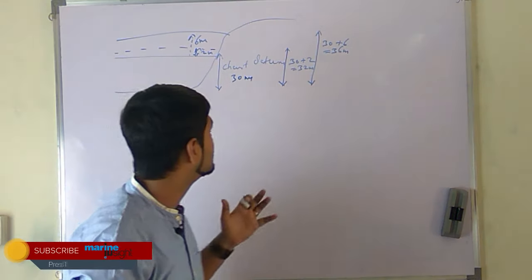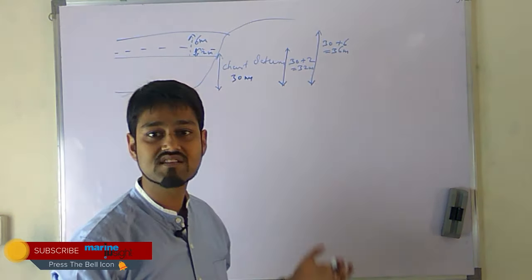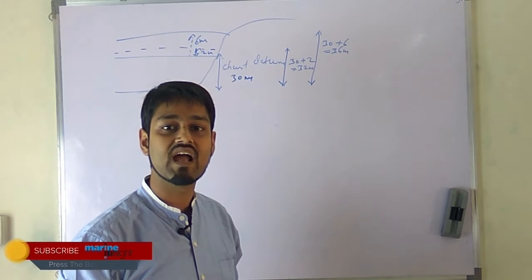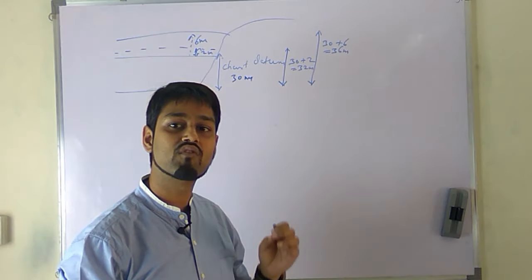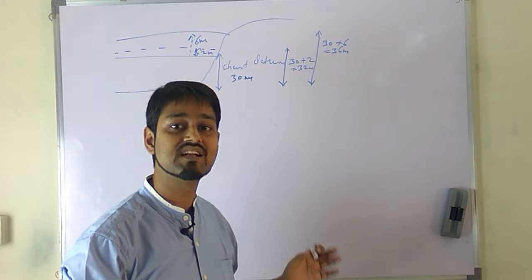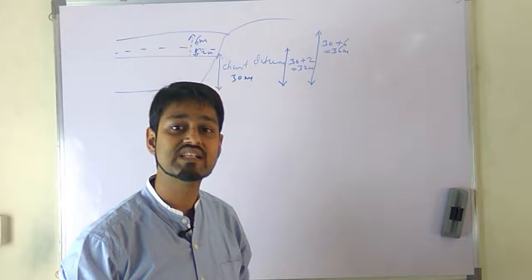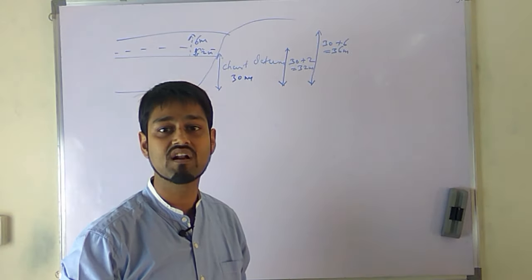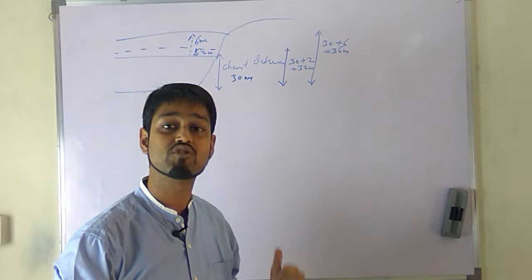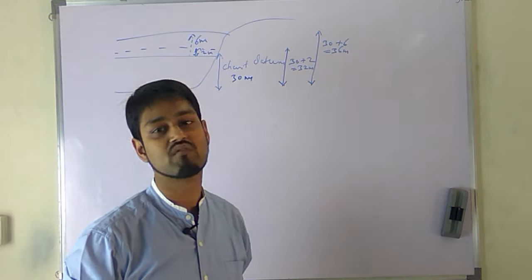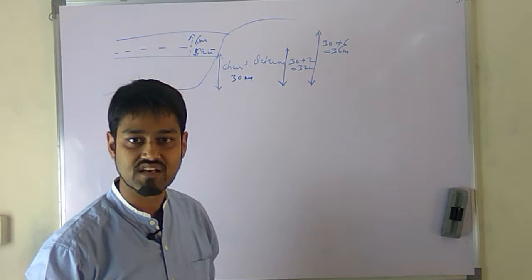So the result of this that we understand is that the height of tide, whatever the height is, is not important. The thing that is important is that whatever the height of tide at any place is, it is always increasing the depth of water. And that means it should always be added to chart datum or charted depth to get your total depth of water at that time. I hope this part is clear to you.